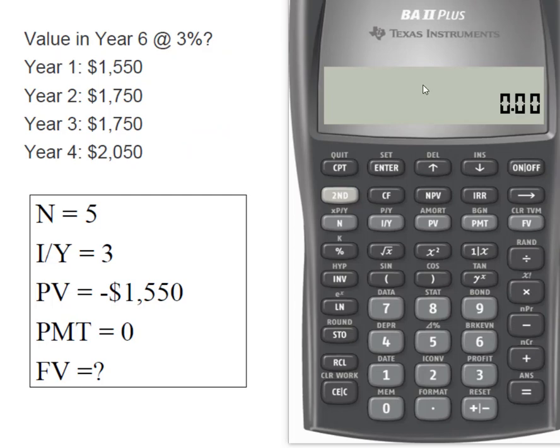So I'm going to start with year one. First thing I'm going to do is clear my calculator, make sure I don't have any junk left. My N is five because I'm going to make the deposit in year one and I want to know the value in year six. The interest rate is three percent. Present value is how much I'm going to write the check for today, which is $1,550. And because I'm writing a check, it's going to be my negative value. That's my present value.